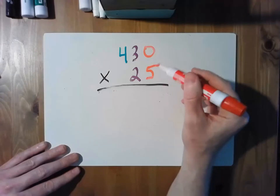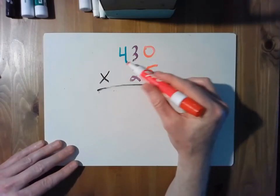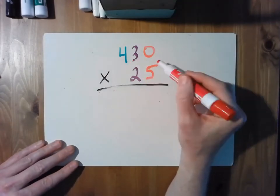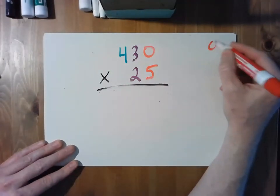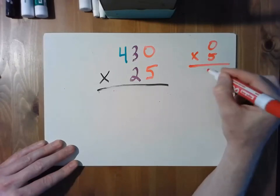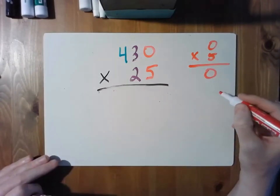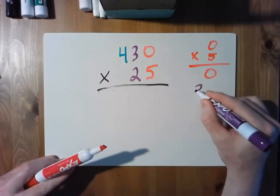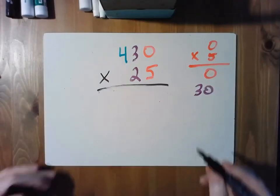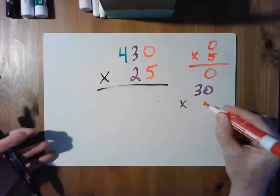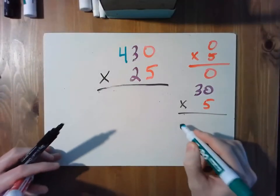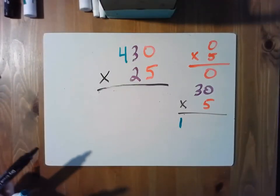To do this, we're going to multiply all three digits in the multiplicand by the 5. So we have 0 times 5, and that is 0. Then we have 30 times 5, and that's 150.